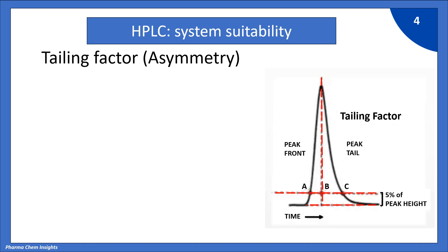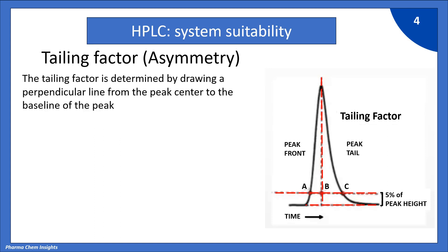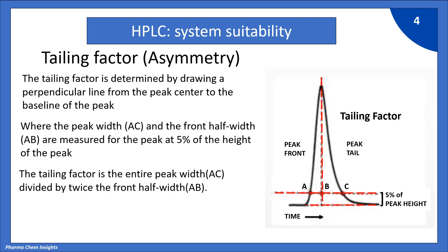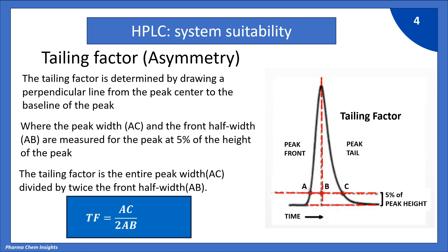First parameter: tailing factor, also called as asymmetry. The tailing factor is determined by drawing a perpendicular line from the peak center to the baseline of the peak. You can see in the figure where the peak width AC and the front half width AB are measured at 5% of the height of the peak. The tailing factor is the entire peak width AC divided by twice the front half width AB, that is TF = AC / (2 × AB).